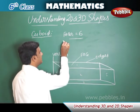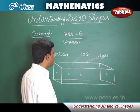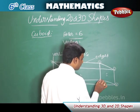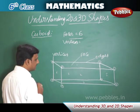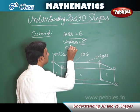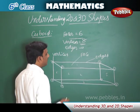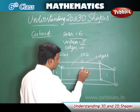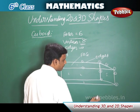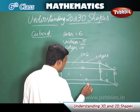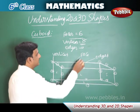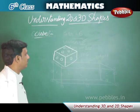Now let us count the vertices of a cuboid. Counting: one, two, three, four, five, six, seven, eight — a cuboid has eight vertices. Now let us count the edges: counting all edges on the top, sides, and bottom — one through twelve — a cuboid has twelve edges.